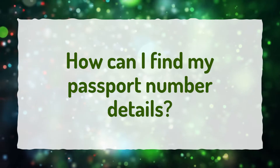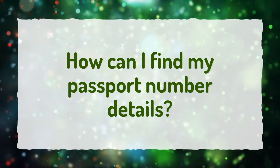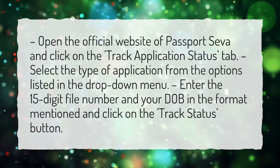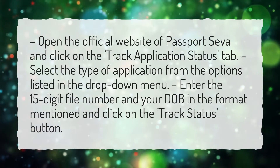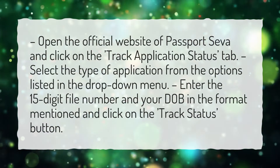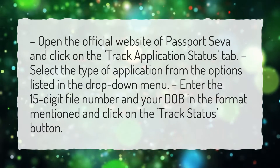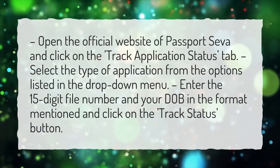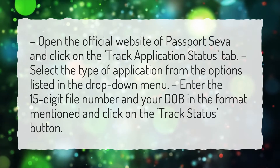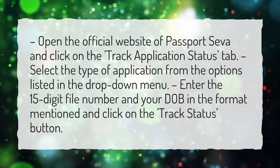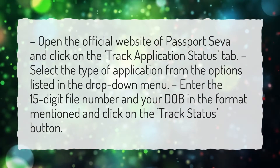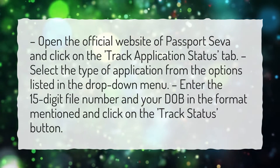How can I find my passport number details? Open the official website of Passport SIVA and click on the Track Application Status tab. Select the type of application from the options listed in the drop-down menu. Enter the 15-digit file number and your date of birth in the format mentioned, and click on the Track Status button.